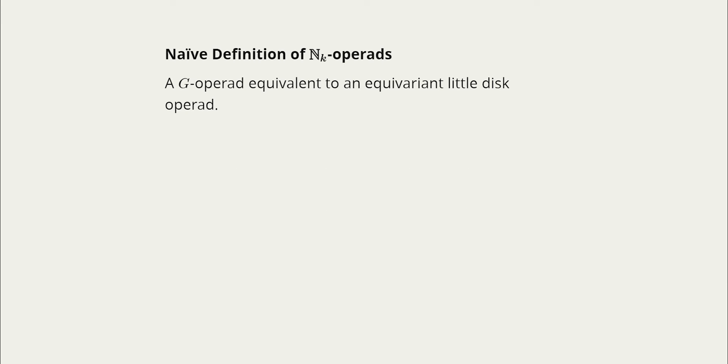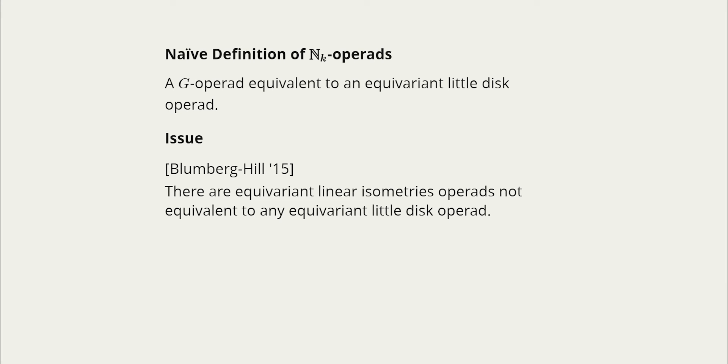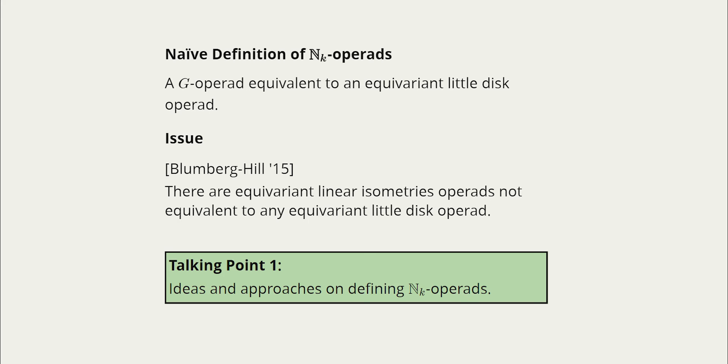Now E_K operads can be defined as something weakly equivalent to a little disk operad. So you might wonder whether this would just naively extend to the N_K operad definition. It turns out that this isn't quite enough. There are other N_infinity operads that aren't equivalent to any little disk operad. So this tells us that defining N_K operads as equivalent to little disks operads isn't quite enough. We won't be able to capture all possible possibilities for norm maps that we want. So this is something I've been thinking about and I would love to talk about further. So feel free to come talk to me about this during the session.